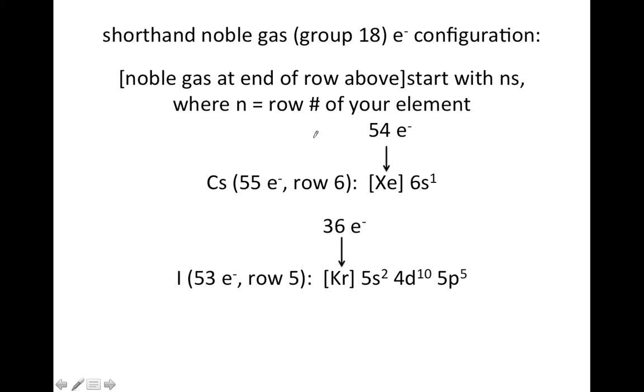Reminder about the shorthand noble gas electron configuration, which may save you some time. You can go up one row from your element and all the way to the right to column 18 and write down that noble gas in brackets. Then you would start writing ns, where n is the row number of your element.